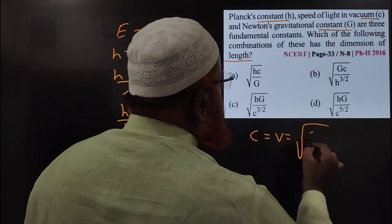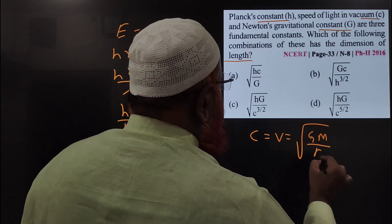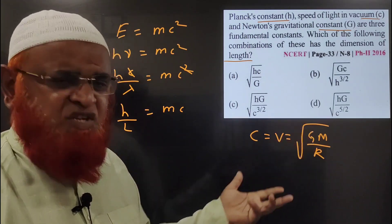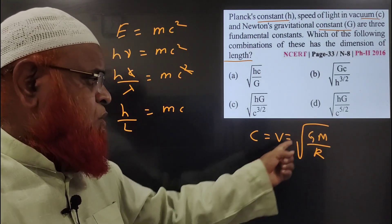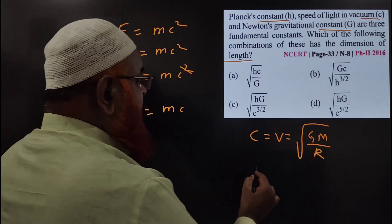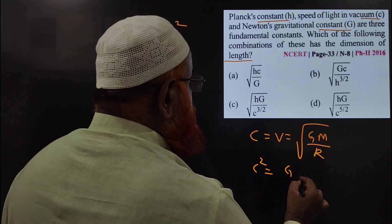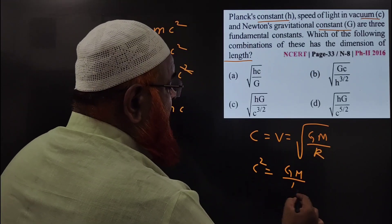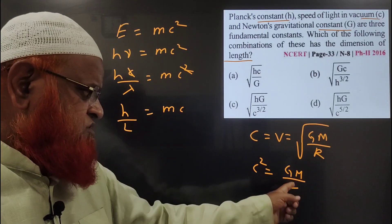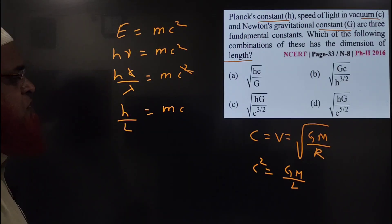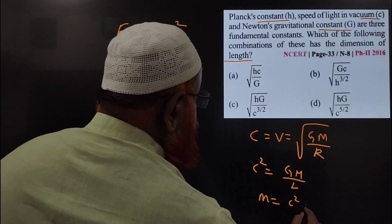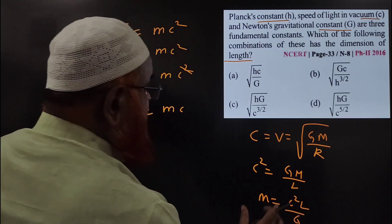The orbital velocity is V equals root of GM by R. Since C is the velocity of light, I can write C equals root of GM by R. Squaring both sides, C² equals GM by R, so R — which I take as length L — gives C² equals GM by L. Therefore, M equals C²·L by G.